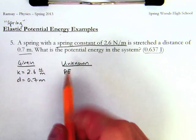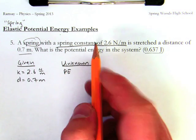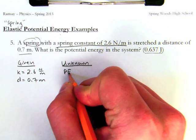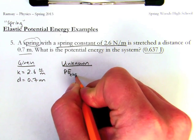We're talking about a spring and I'm given a spring constant, so I automatically know this is going to be my elastic potential energy.